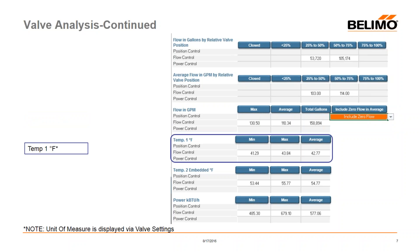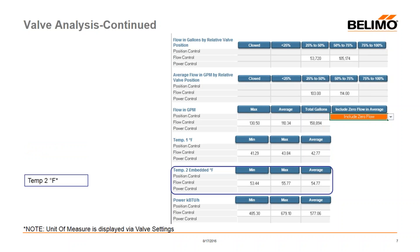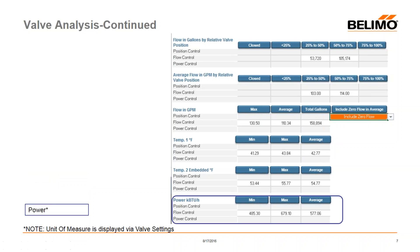The temperature boxes show T1 and T2 — either supply or return depending on valve installation — displaying minimum, maximum, and average temperatures. In this example we're averaging about a 12-degree delta T across the board, which is pretty good. Units of measure are displayed per the valve settings on the dashboard, so if set to Celsius it would say degrees C. The power box then shows minimum, maximum, and average power or BTU output of that coil.